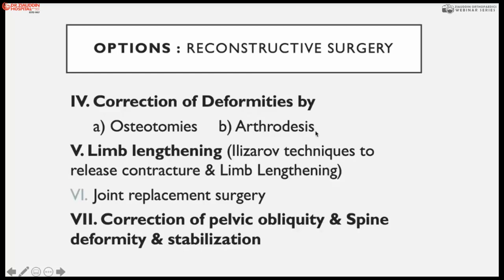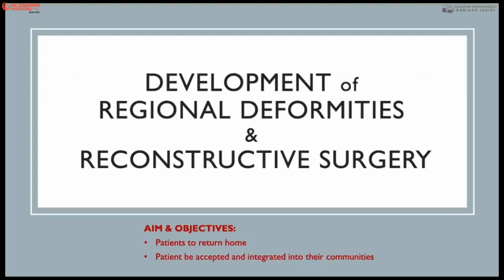Stabilization of joints by osteotomy and arthrodesis, limb lengthening procedures with Ilizarov technique combined with contracture release, joint replacement in polio surgery, and correction of spinal and pelvic obliquity have been discussed. Today the objective of reconstructive surgery is to help the patient return home with ease, have good stability, and be accepted as an integrated part of the community.